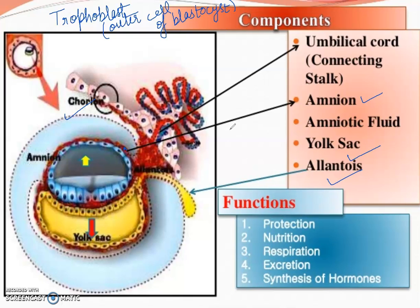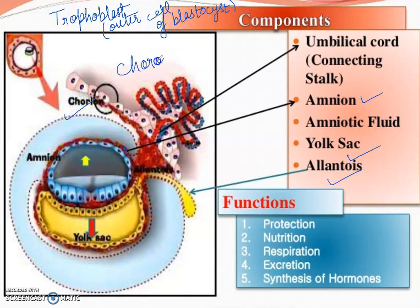Chorion ke baare mein - the part of chorion in contact with endometrium, jo chorion aur endometrium ke contact mein hai, woh finger-like projections produce karta hai jis ko hum bolte hain chorionic villi. Villi are finger-like projections and they increase the surface area, and it will form placenta.